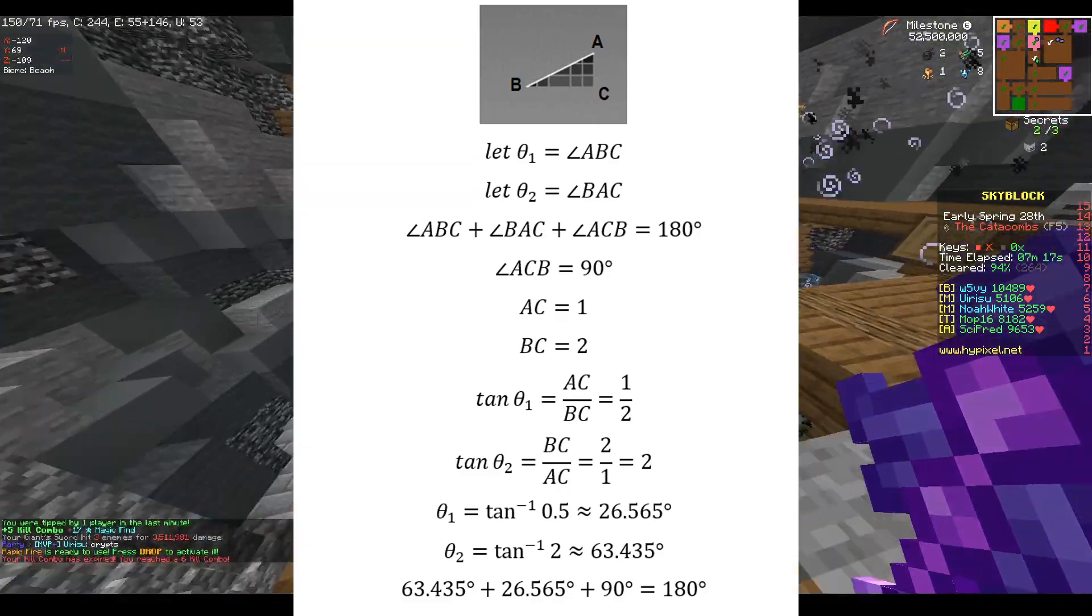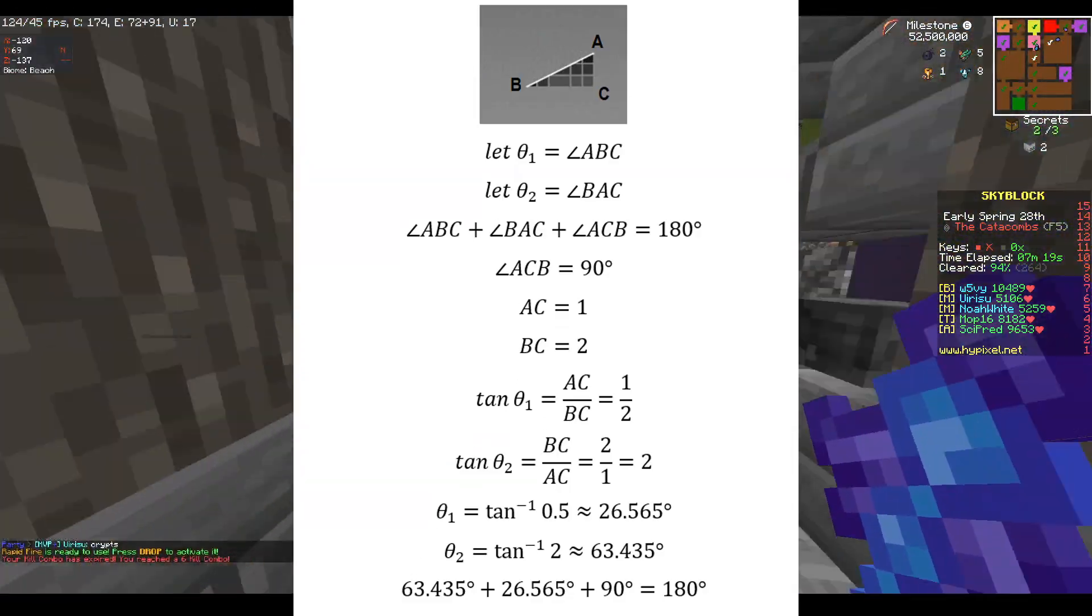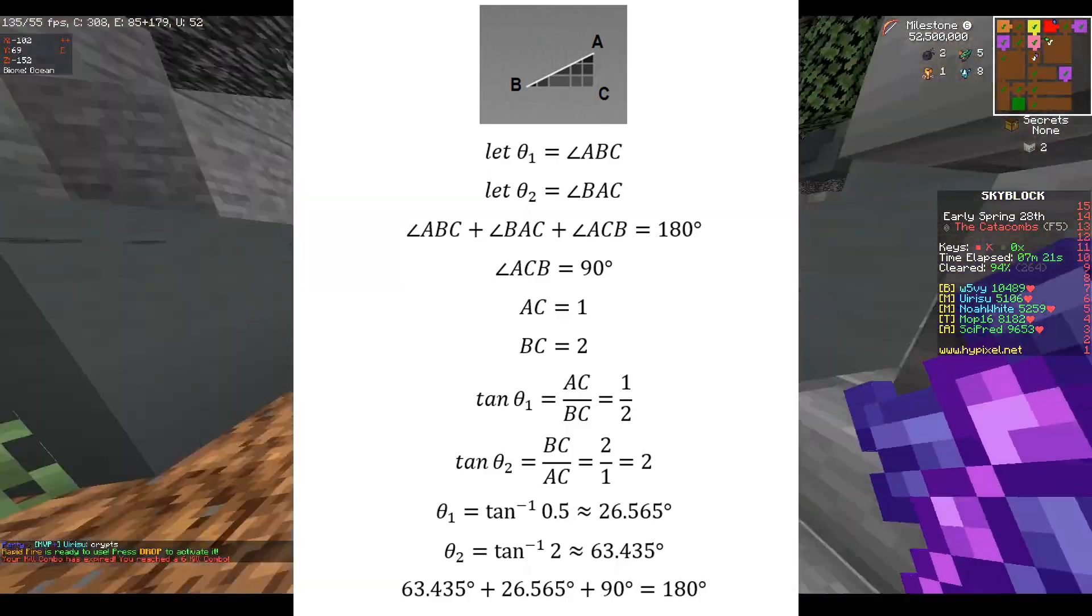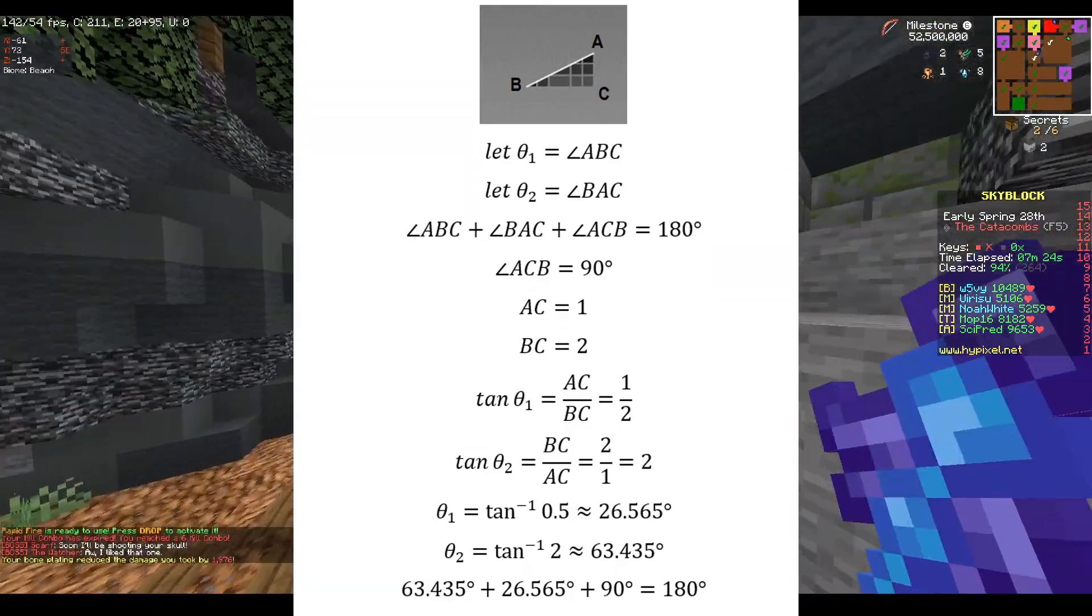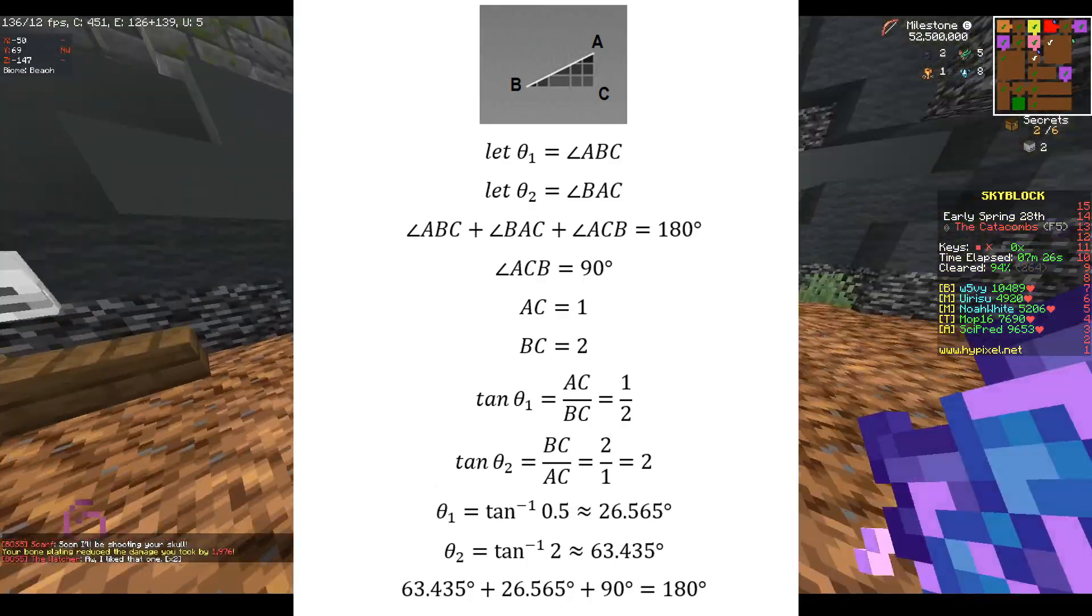If you find even the easiest bits of mathematics too difficult for your primitive brain to comprehend, then this may not be the video for you if you want to understand why it isn't 22.5 degrees.